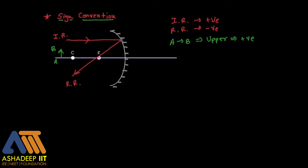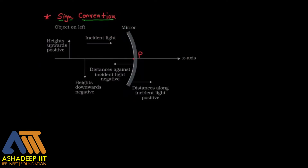So what happens with the principal axis: the height of AB in the upper part is positive. Now if we have A dash and B dash — the image — and this A dash to B dash is in the lower part below the principal axis, it will be negative. That is how we are going to follow the sign convention throughout the chapter.